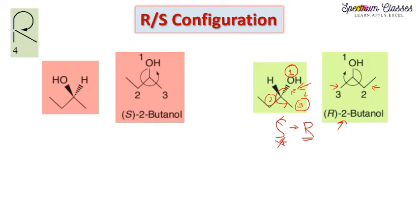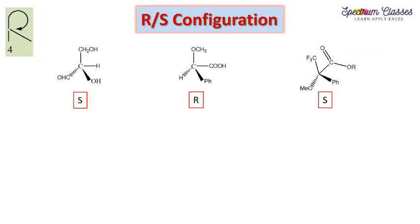Now let's work through more examples. First, decide the priorities — first priority group, second priority group, third priority group, and fourth priority group as discussed previously. The fourth priority group here is not on the backward side, so the rotation I observe is clockwise, which suggests R. But since my fourth priority is not on the vertical line, I make one interchange and get S.